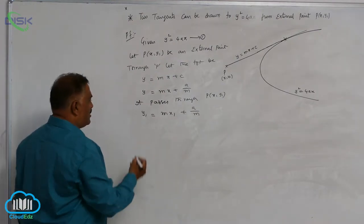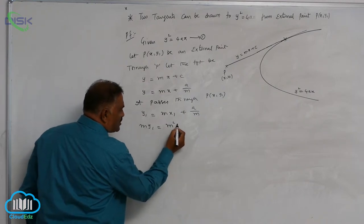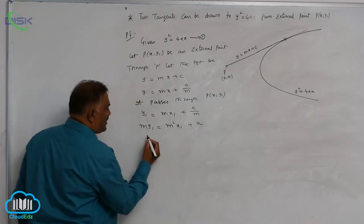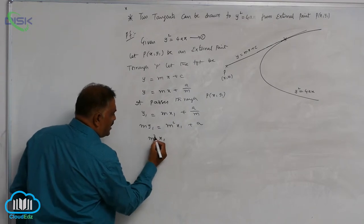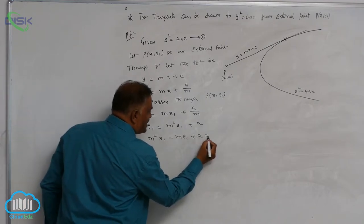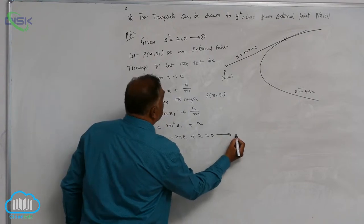Cross multiplication. m y1 is equal to m square x1 plus a. Therefore, m square x1 minus m y1 plus a is equal to 0, equation 2.